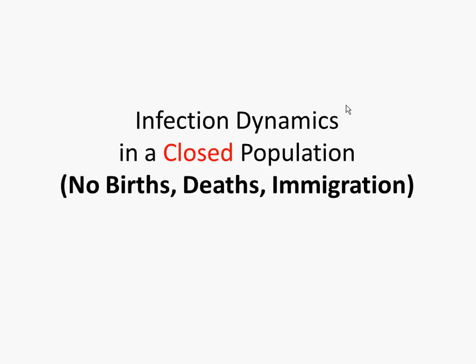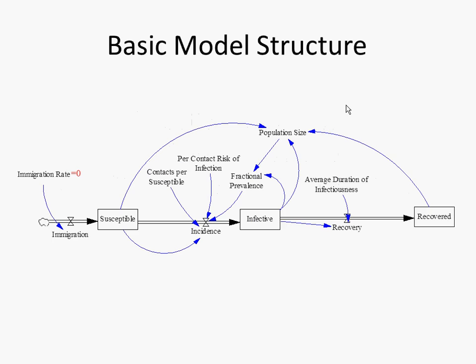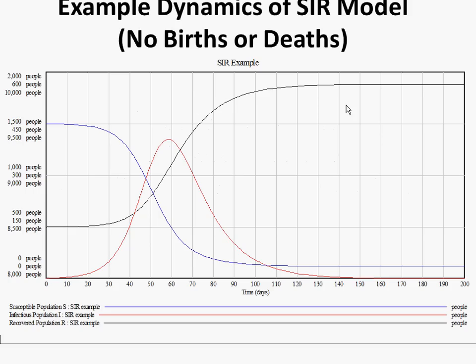Now I want to talk about the dynamics as they play out in different types of populations. The first is a closed population with no population turnover — no immigration, no births, no deaths. Here we have some number of infectives, shown in red, that build up over time and then decline. There's a number of susceptibles, shown in blue, that decline over time. And there are some recovereds. This is the characteristic dynamics associated with this model.